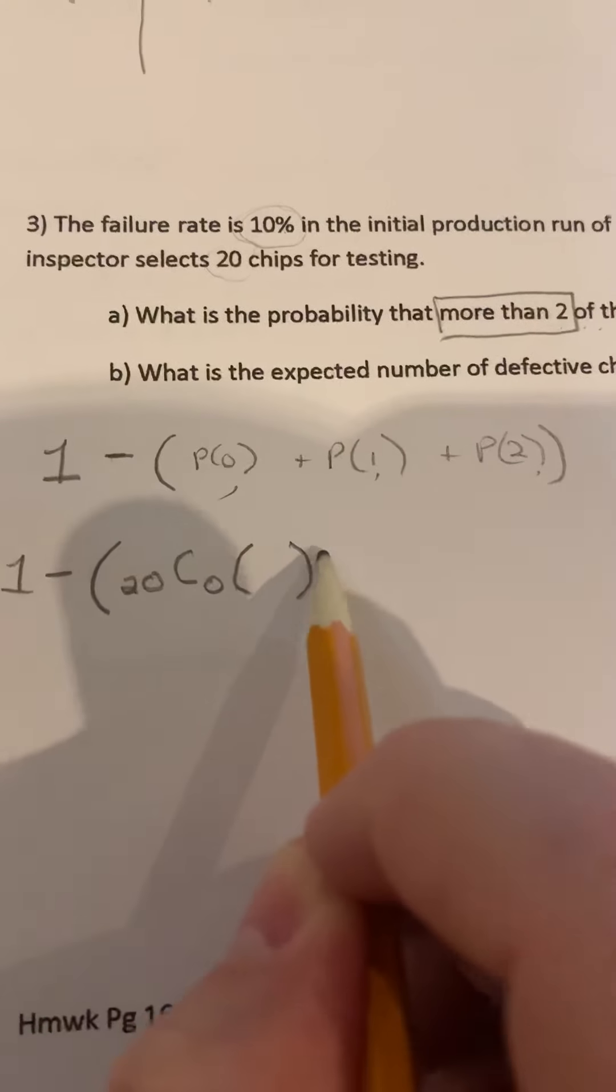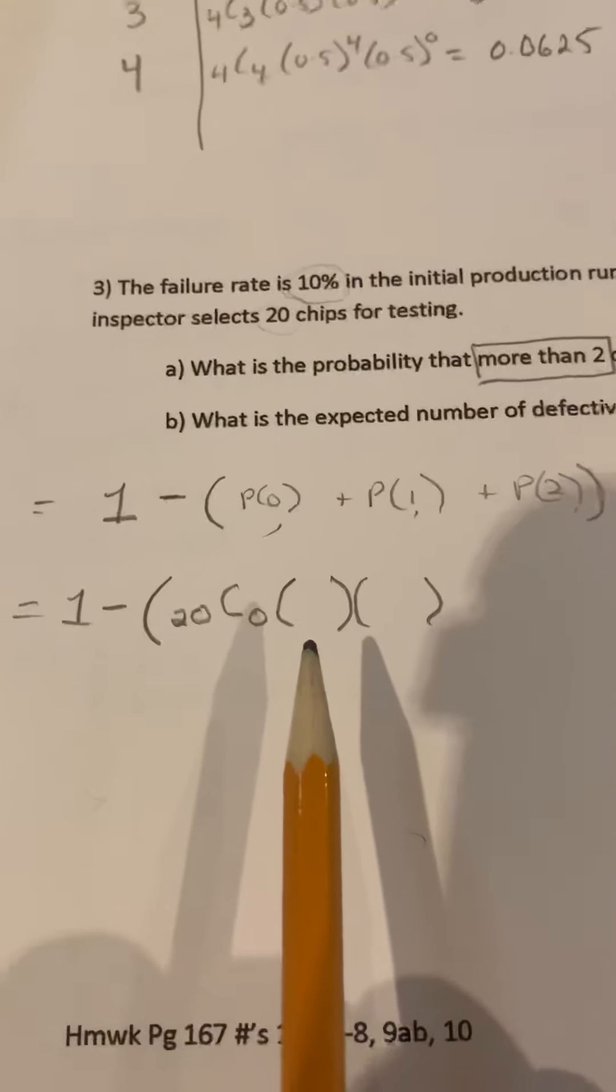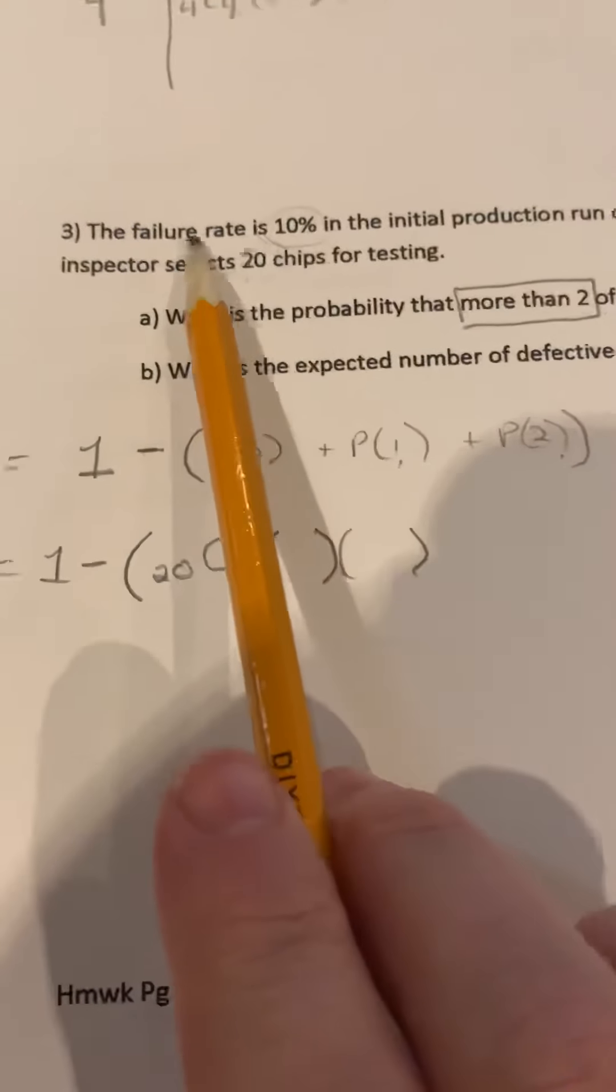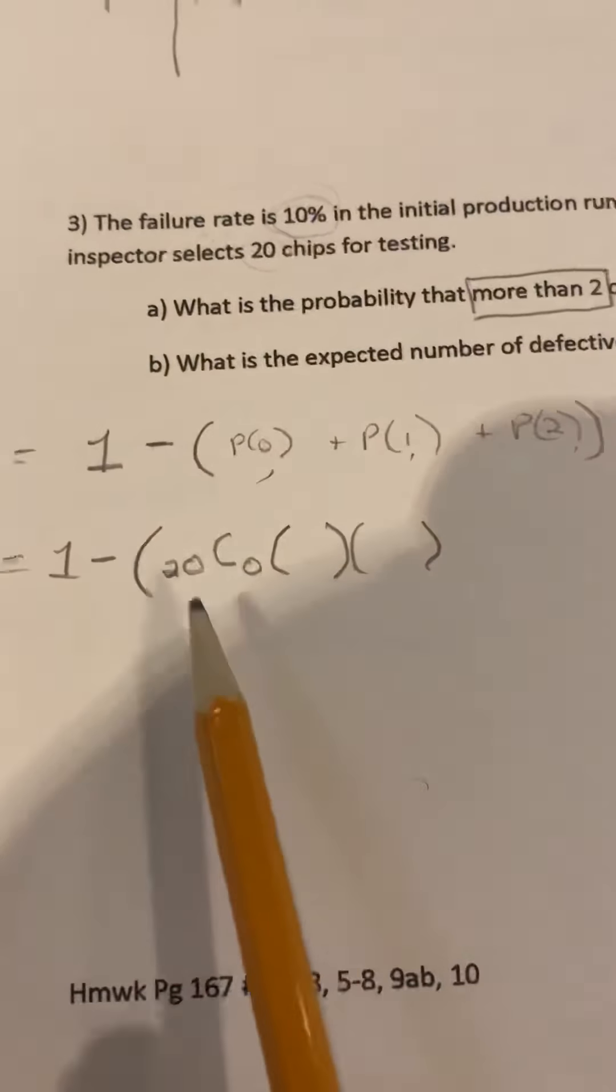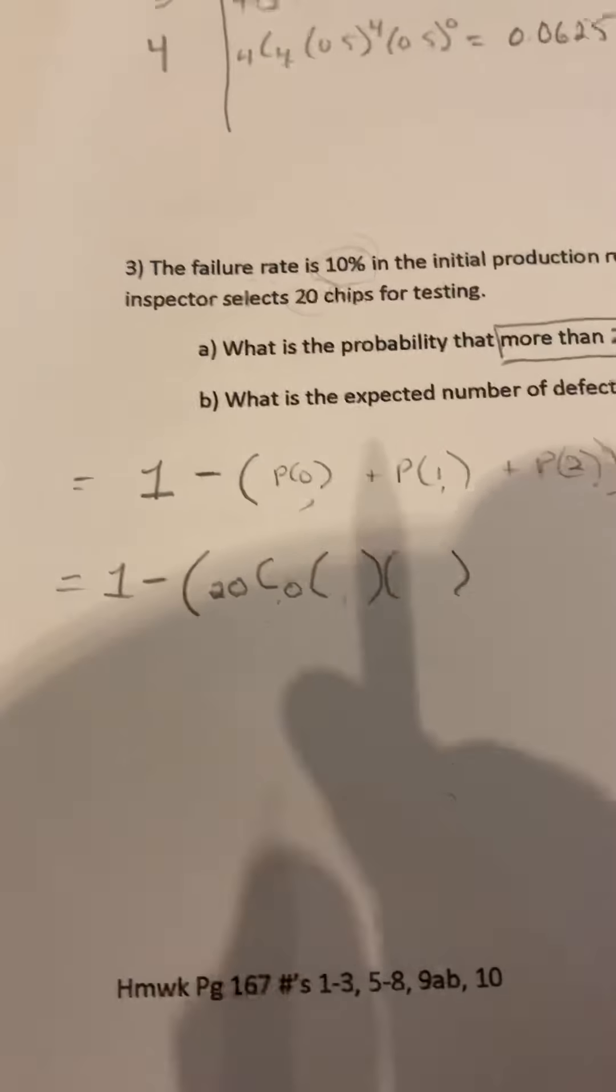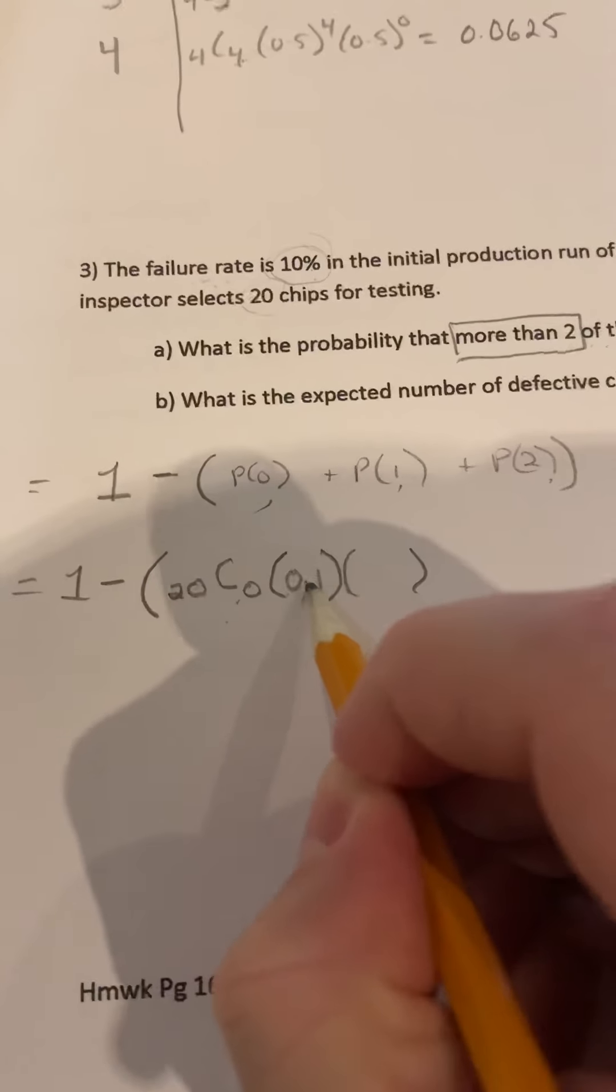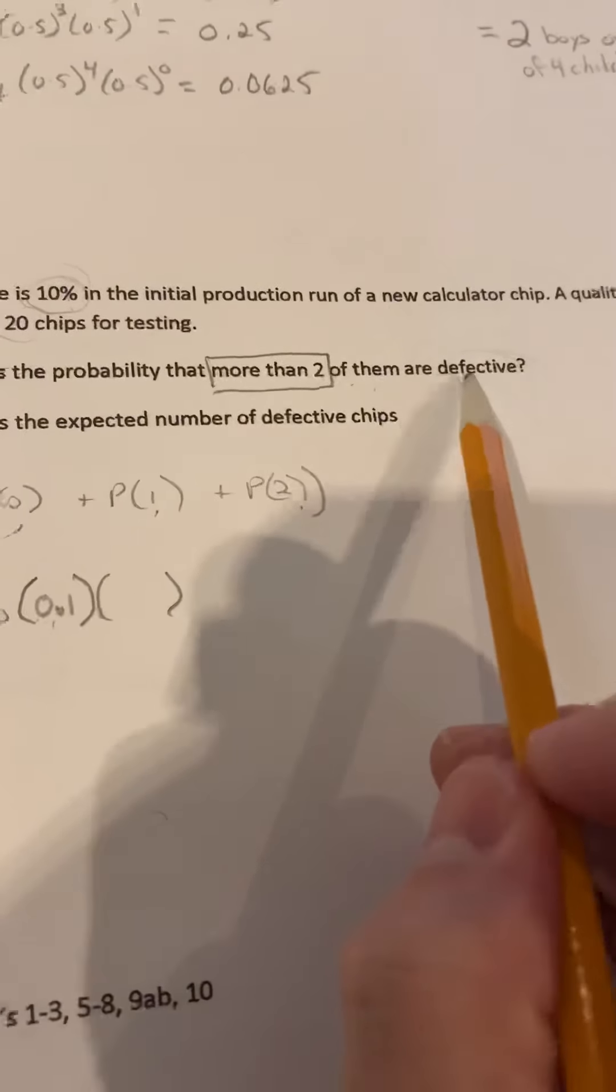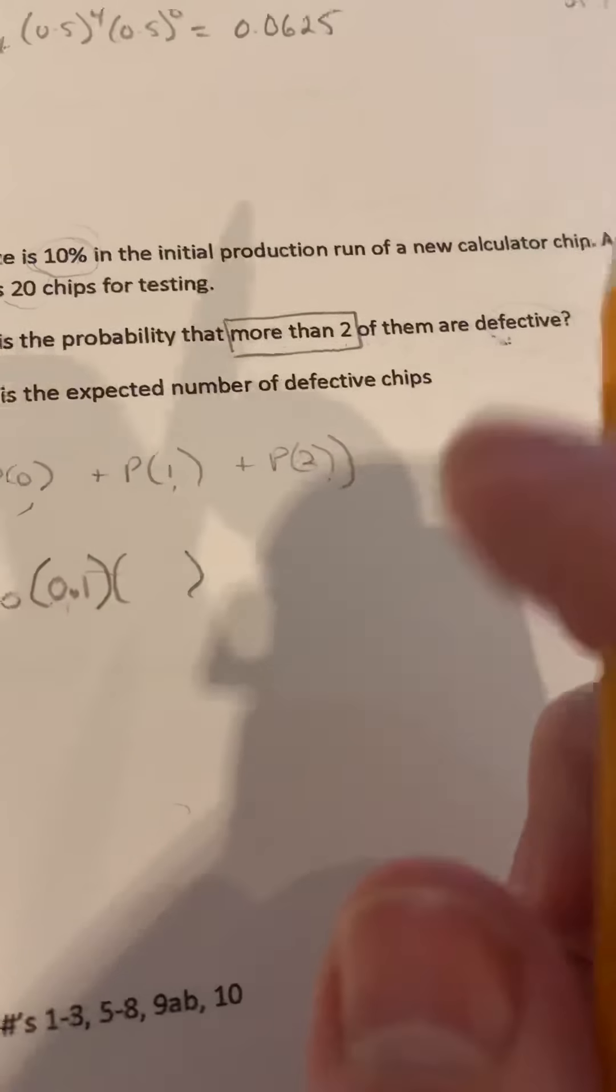Now we're multiplying that by the probability of success. So this one, the probability of success kind of sounds weird, because we're trying to measure the failure rate. We're looking at the failure rate. So what is the probability that we're looking at that it will fail? We're saying that the failure rate is 10% or 0.1.